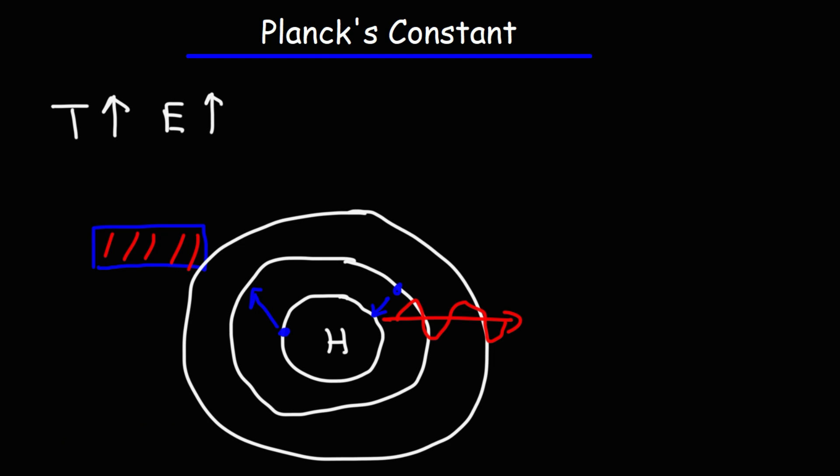Now, the energy that is carried by a photon is a multiple of this value, HF. So we're going to put an N, where N is an integer, H is the Planck's constant, F is frequency.